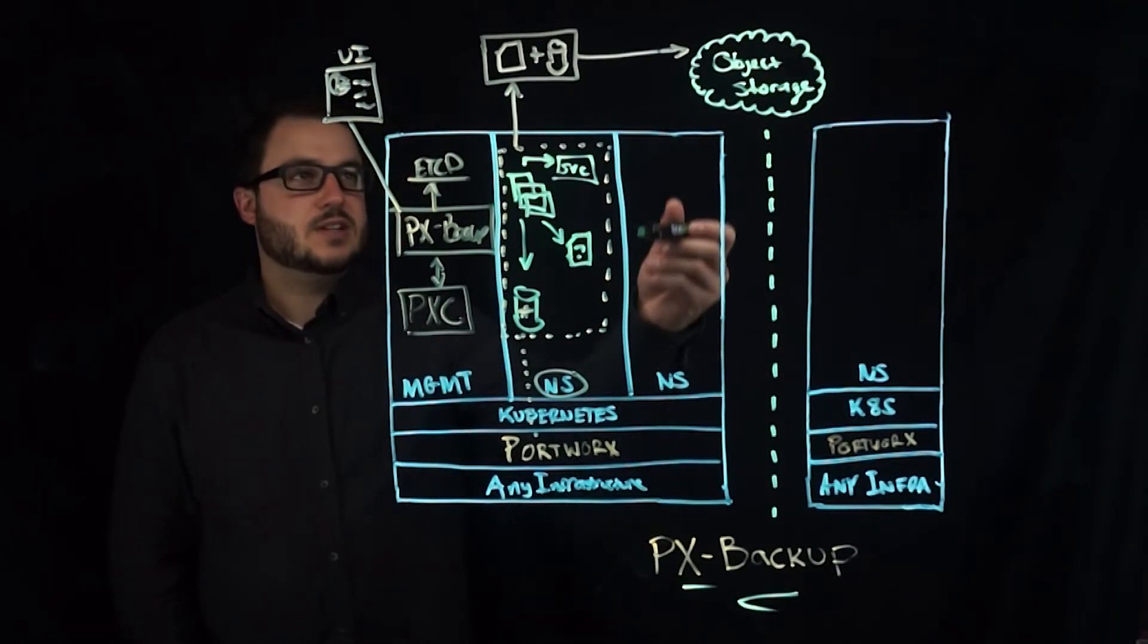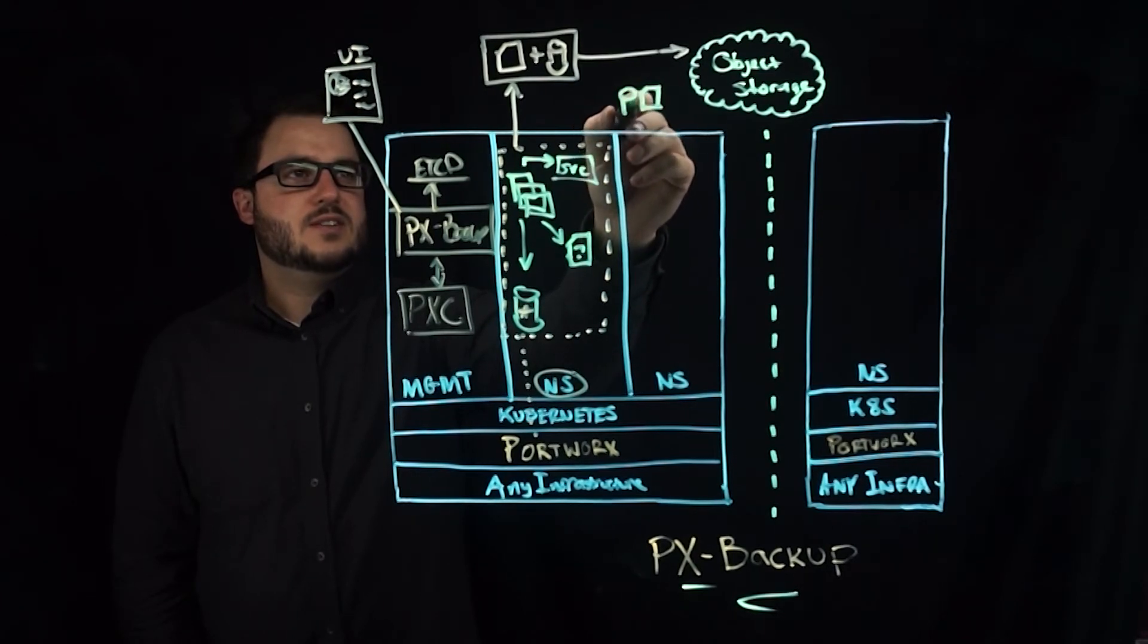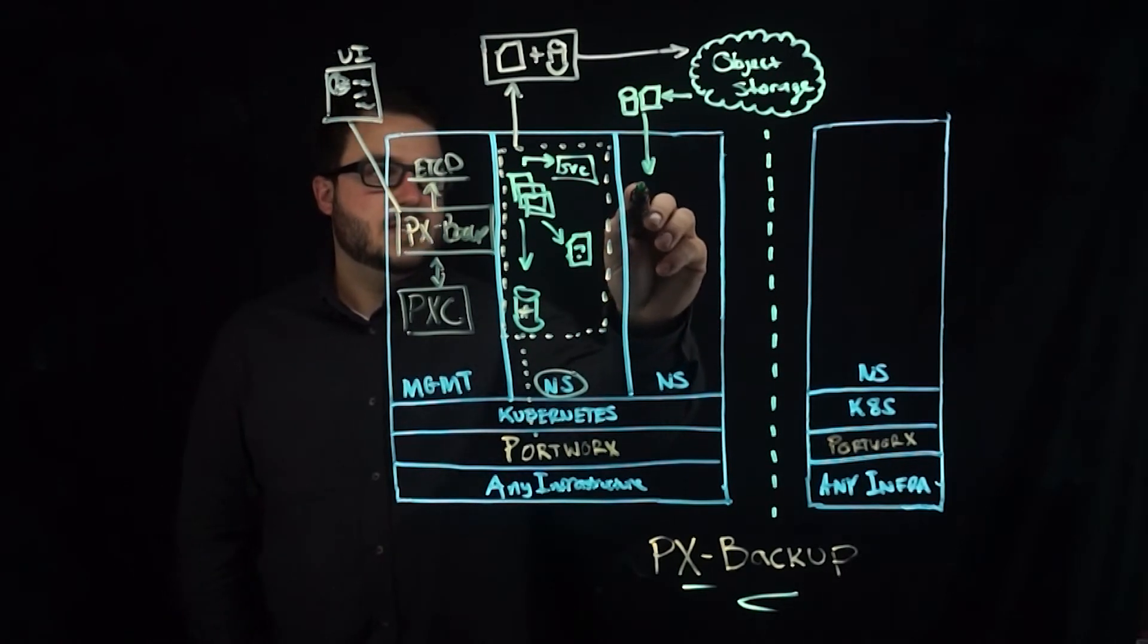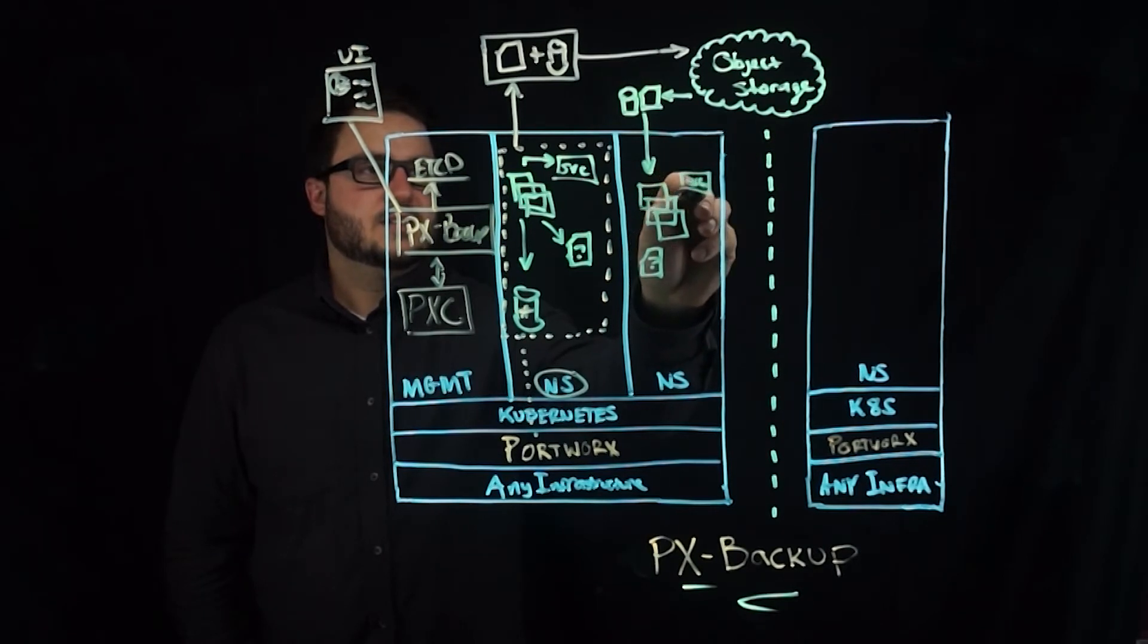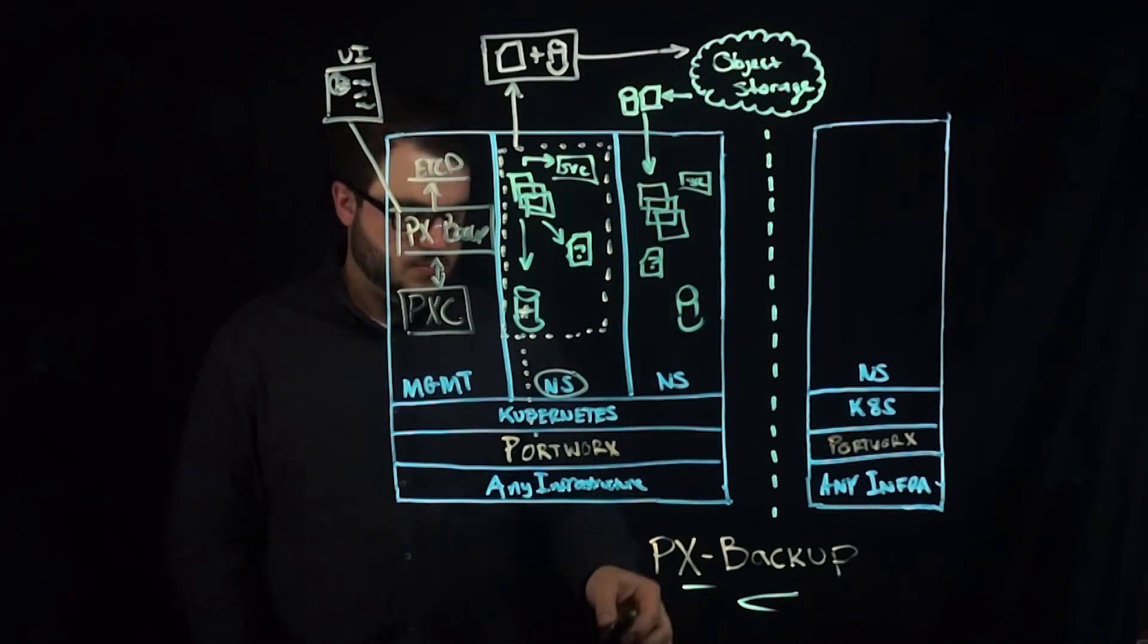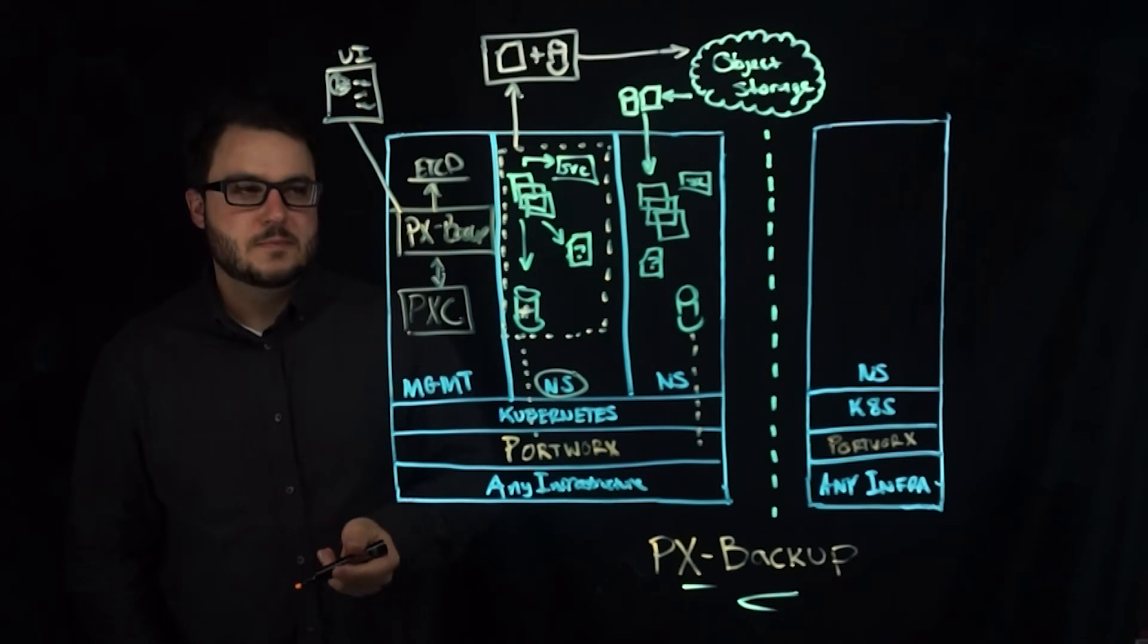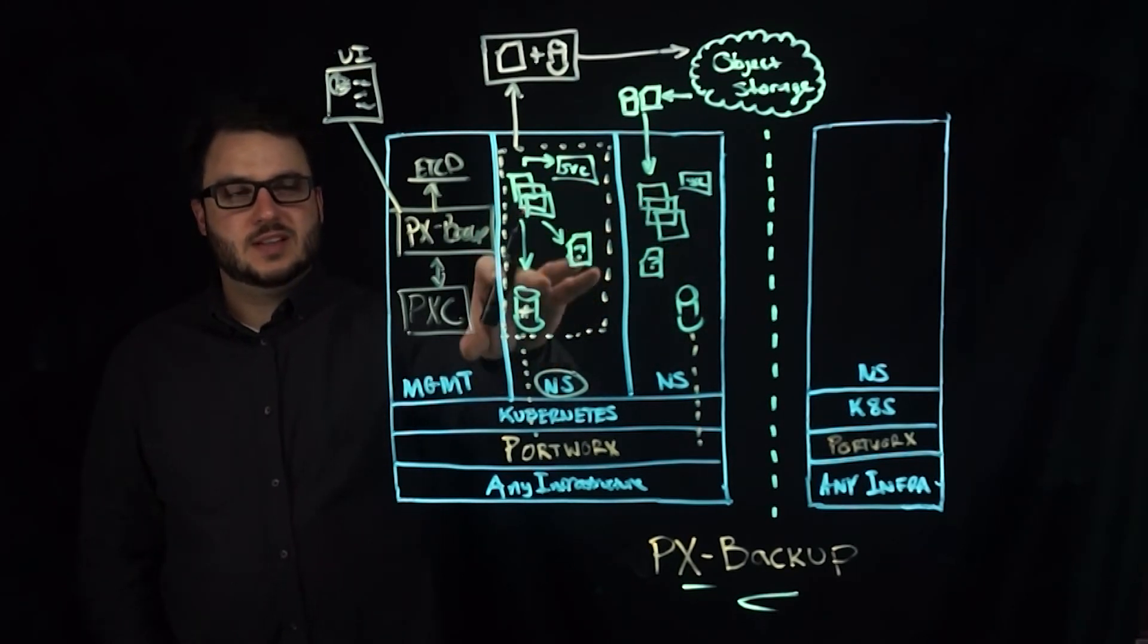Now for recovery, we can go ahead and instruct Portworx to take those objects, which in this case is all the objects and data, and place them back into the namespace of the existing Kubernetes cluster. So we then instantiate everything in here. We'll get the secrets. We'll get the service and the volume. And Portworx will be able to understand that it has an available snapshot backup that it can restore. So your application is recovered to the last known backup.